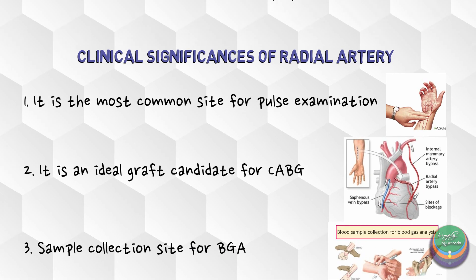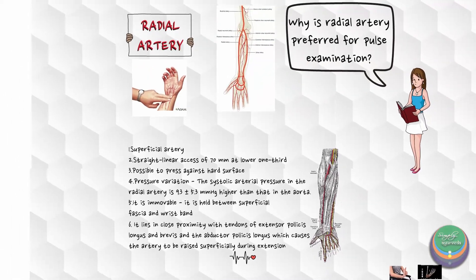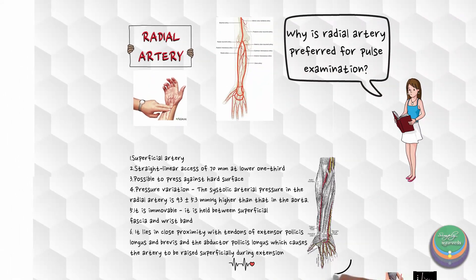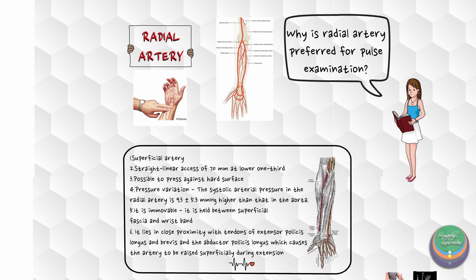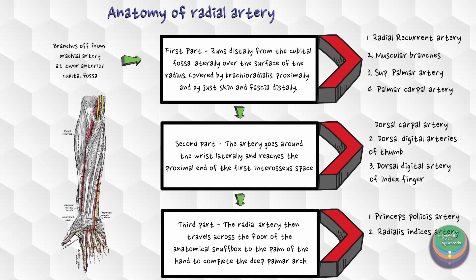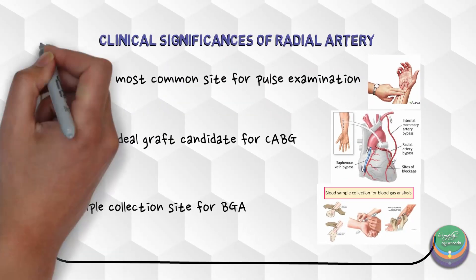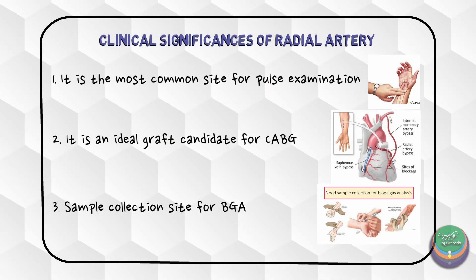Let us now review what we have learned in this video. We tried to understand why globally the radial artery is considered the ideal site for pulse examination. We then looked into the anatomy of the radial artery — it originates from the brachial artery, runs from the cubital fossa to the palm, and can be divided into three parts. We also looked into the branches of the radial artery and finally a few of its clinical significances.